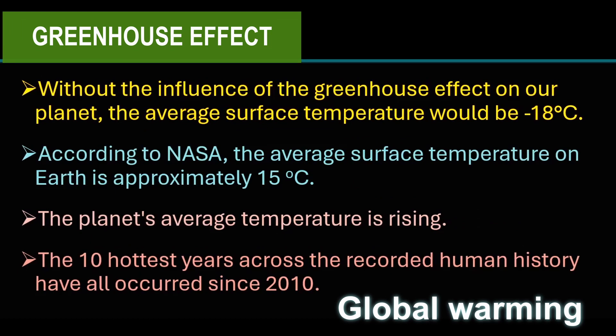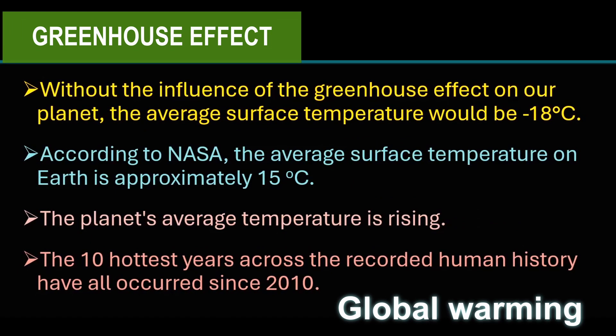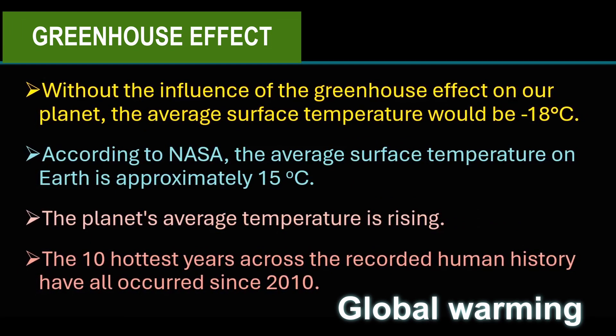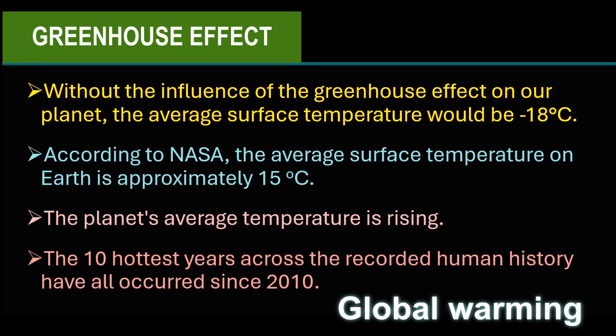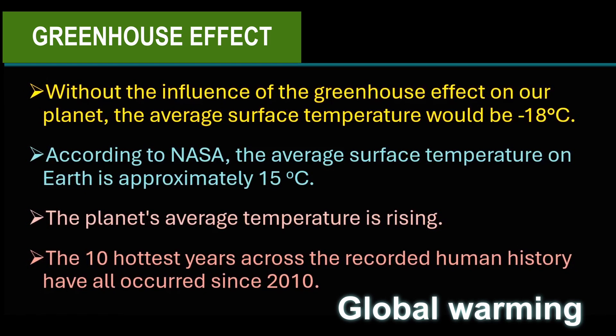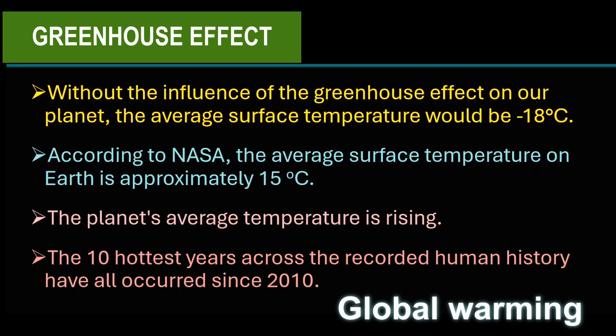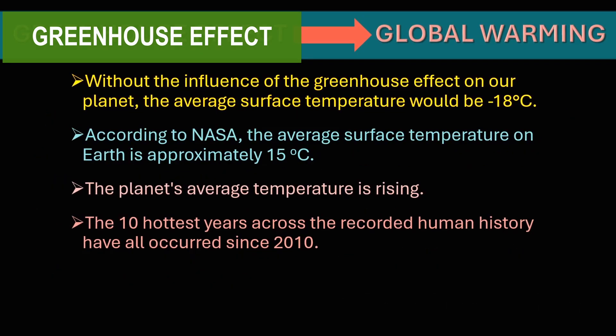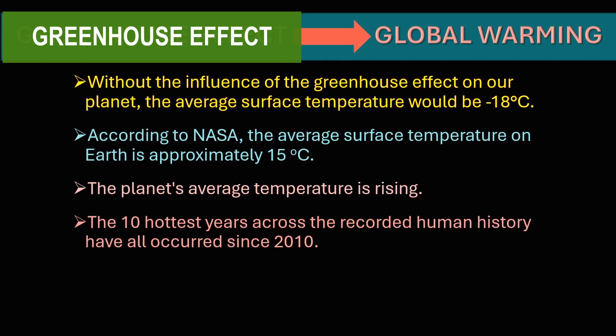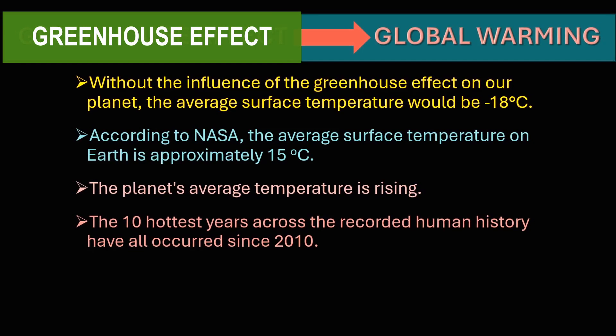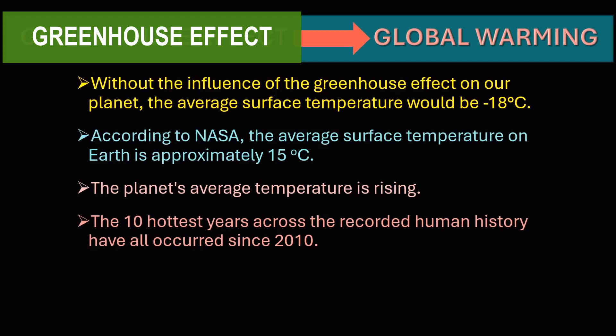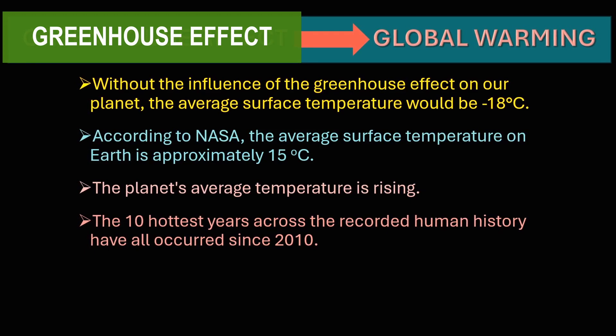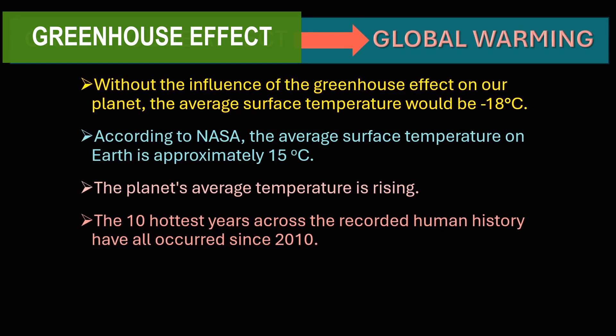According to NASA, the average surface temperature on earth is approximately 15 degrees centigrade. Without greenhouse gases, the temperature of the earth would be minus 18 degrees centigrade. But the planet's average temperature is rising due to the enhanced greenhouse effect. The 10 hottest years across recorded human history have all occurred since 2010.